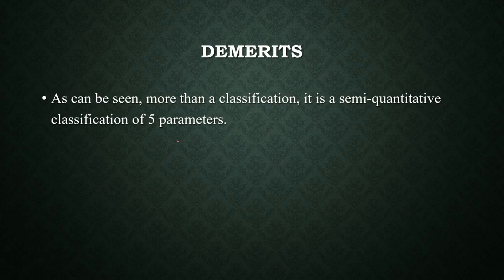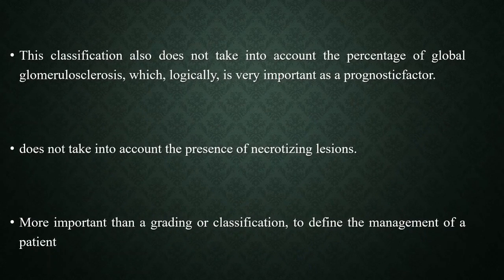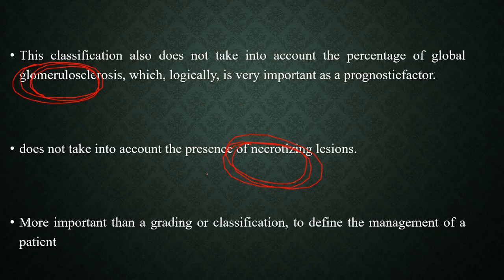Regarding the demerits: the MEST-C is essentially a semi-quantitative classification of histopathological findings. It is not a strict scoring system — prognosis doesn't depend solely on the score; it gives an overall idea about prognosis. M1, S1, T1/T2, and C1/C2 are associated with poor prognosis. Importantly, it does not take into consideration two parameters: global glomerular sclerosis and the presence of necrotizing lesions, which might indicate vasculitic phenomena.